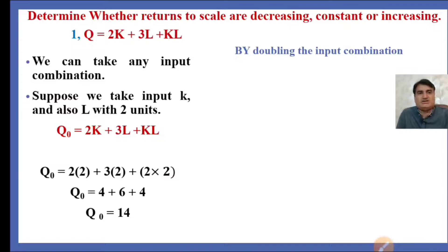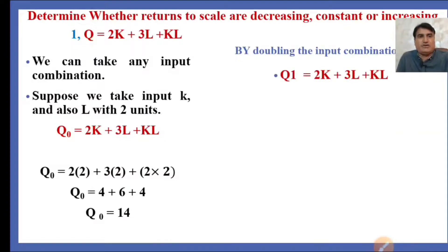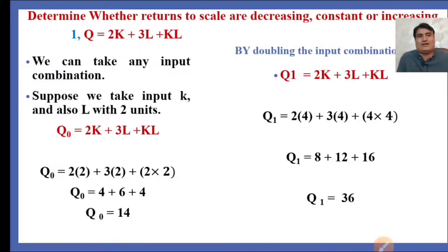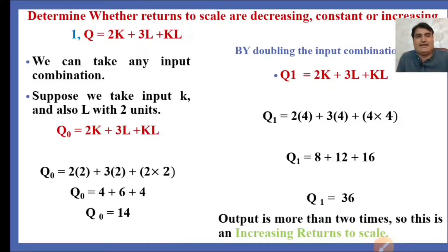By doubling the input combination, the new production function Q1 = 2K + 3L + KL with K=4 and L=4. Solving this gives Q1 = 36. It means if we double the input, we get output that is more than double — more than 2 times. So this is an increasing return to scale.